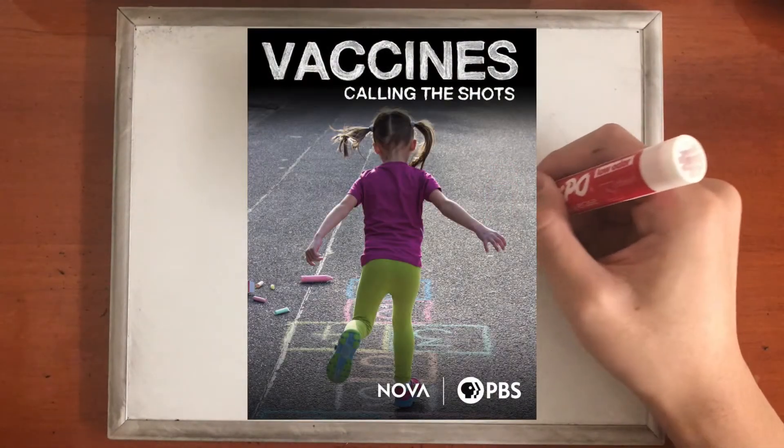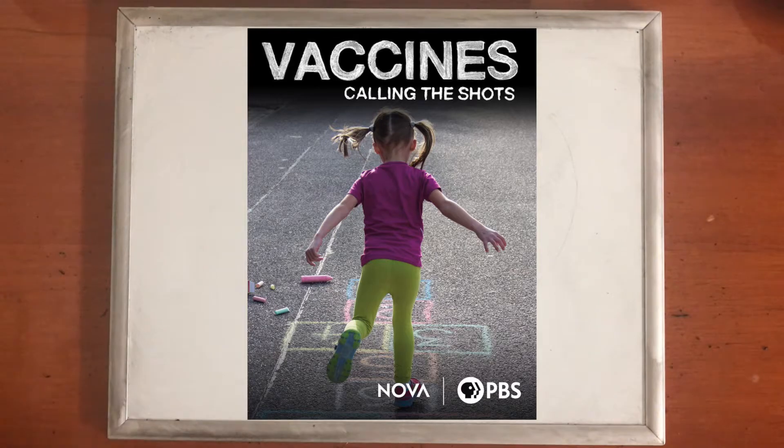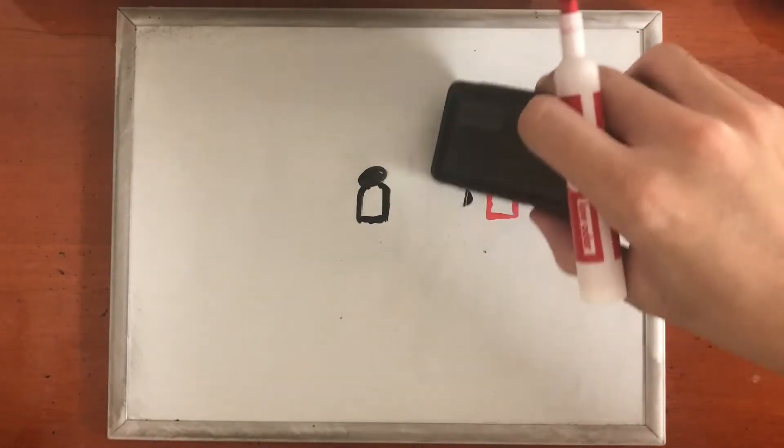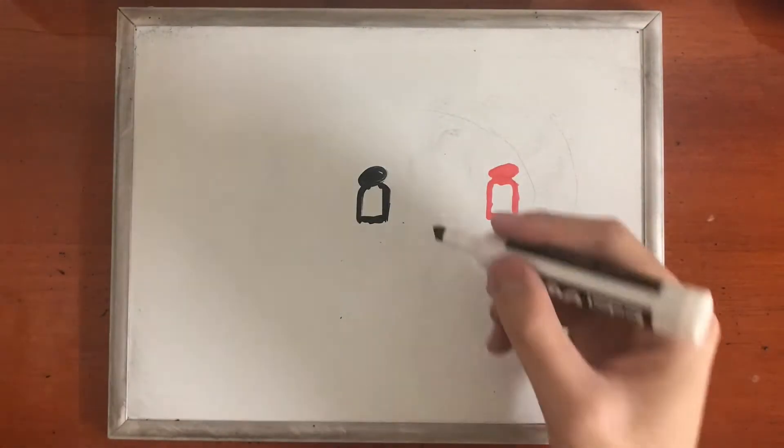Herd immunity is a way to slow and eventually stop the spread of infection from person to person. As summarized by the NOVA documentary Vaccines Calling the Shots, there are two things that matter for whether or not one is going to get sick. One is, if you bump into someone who has the disease, are you protected against it or not?